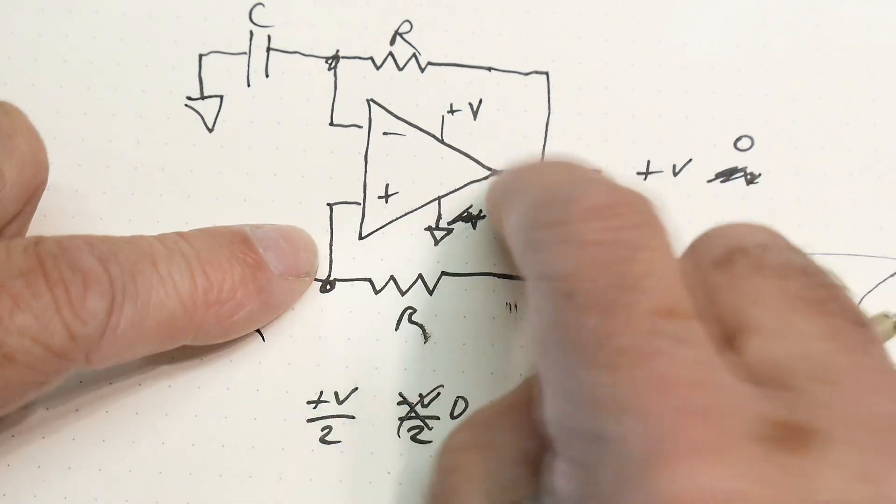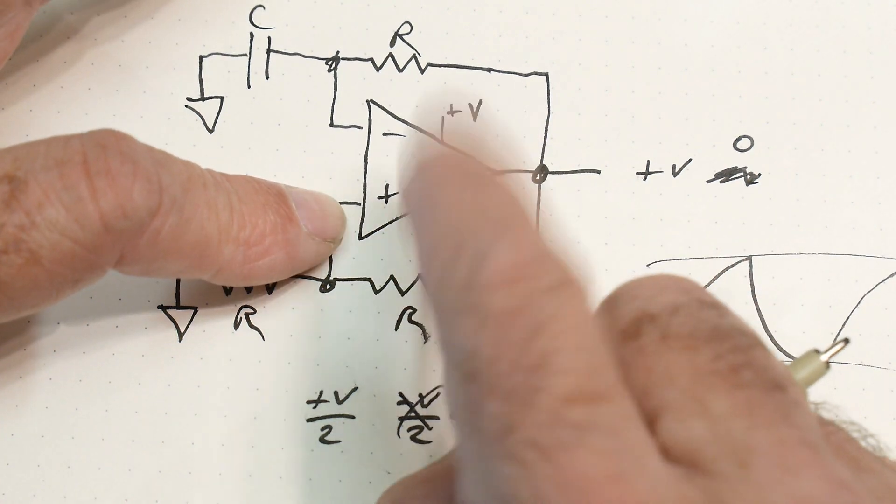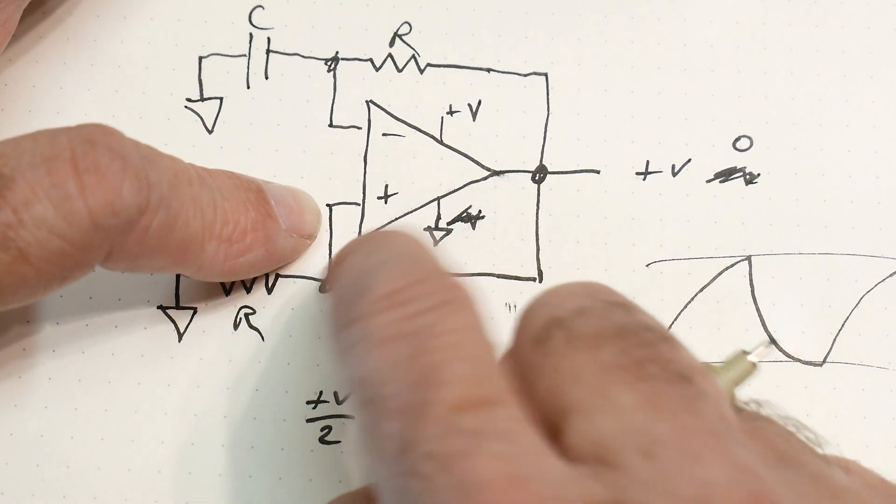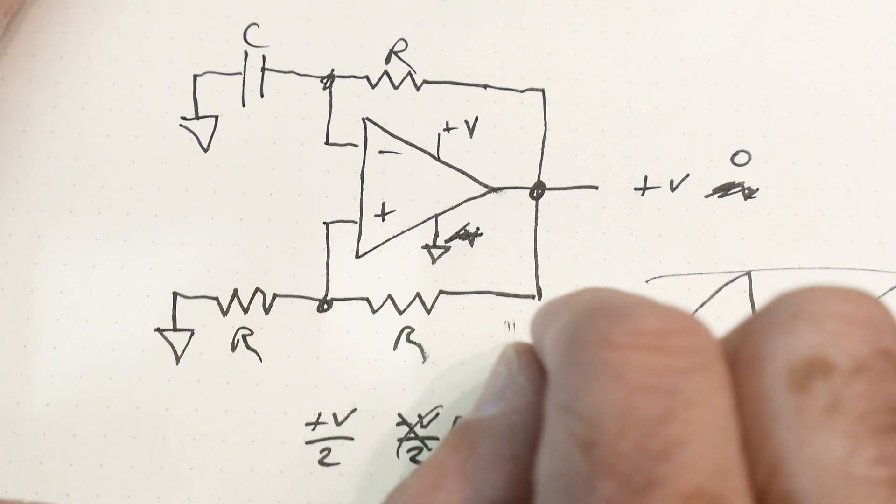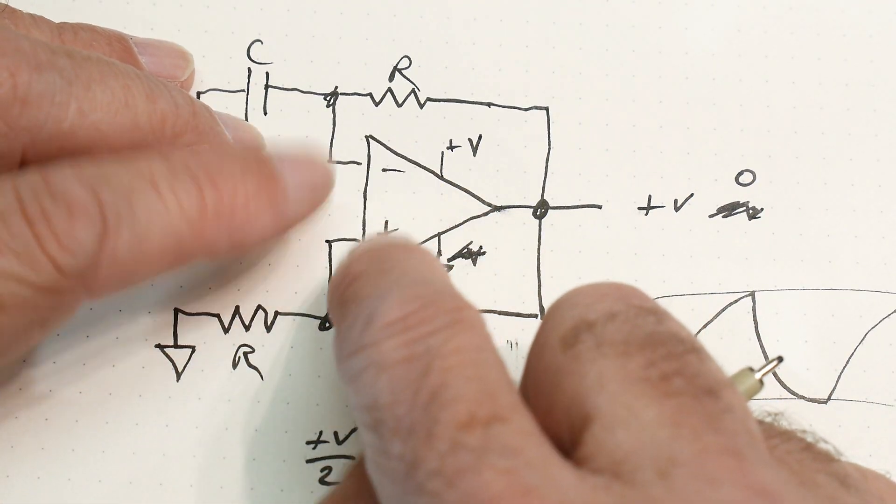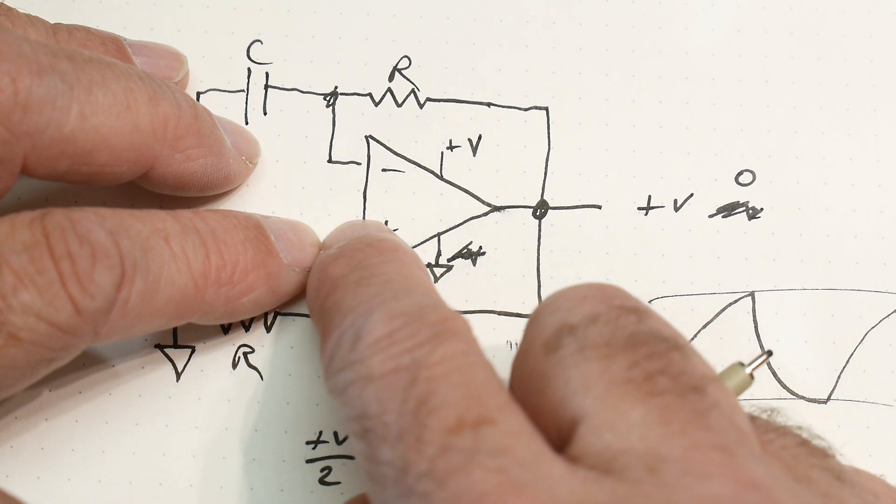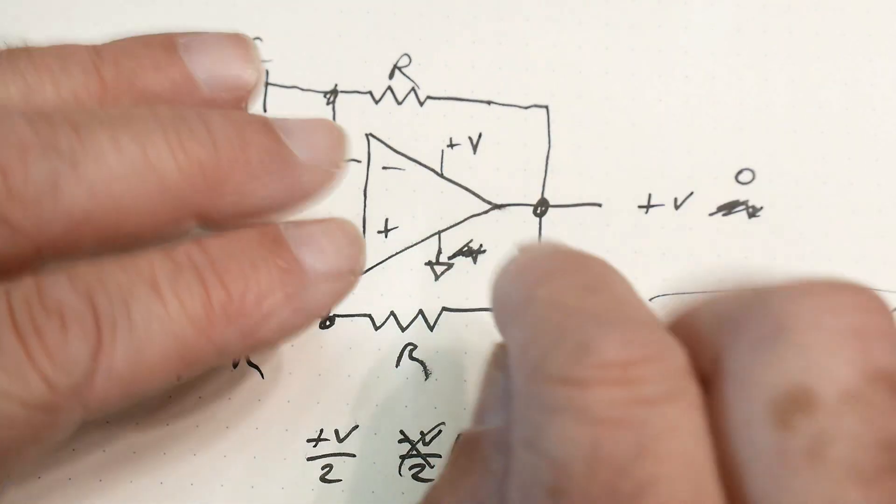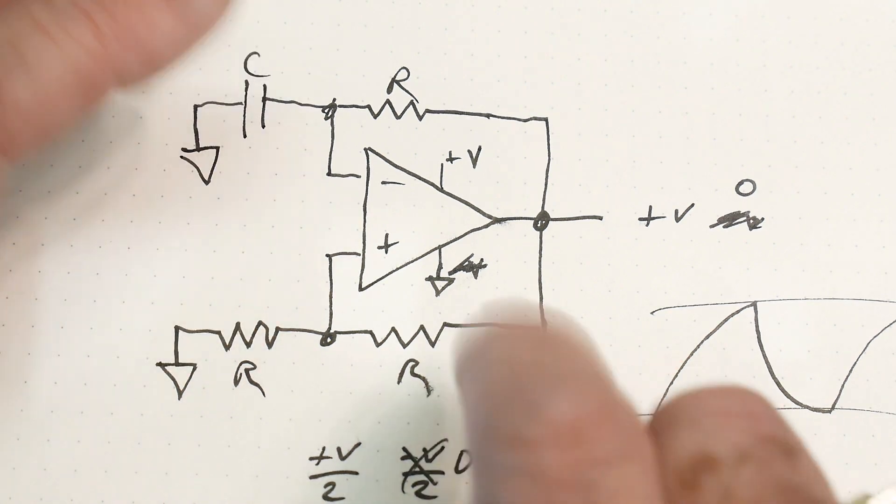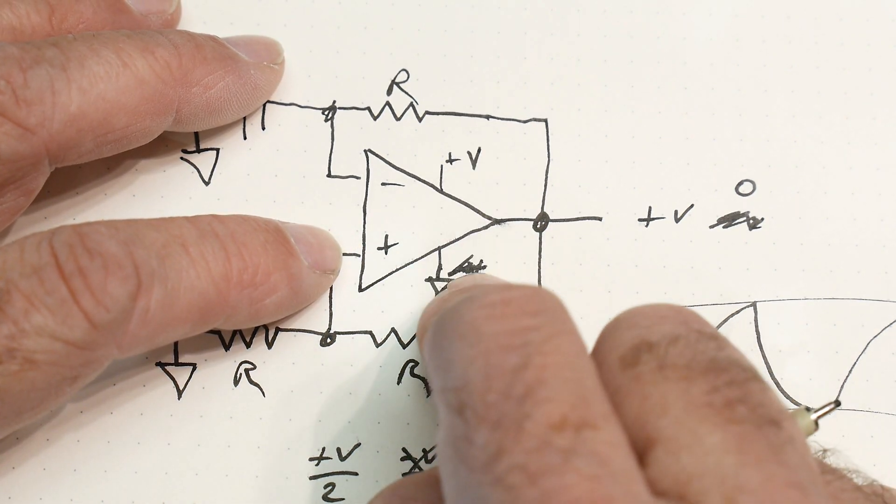And if you have a single ended op amp and you're trying to operate it at zero, most op amps won't ever do that. They don't like to operate right at the ground potential. They need to be biased up. They need to be in their happy zone. And so this circuit will not work if you have a single ended supply.